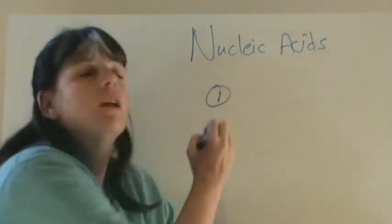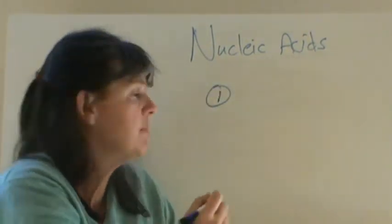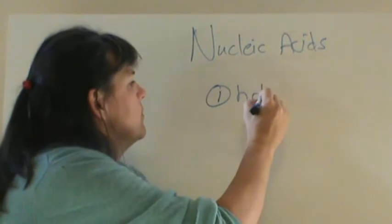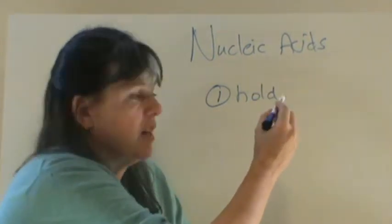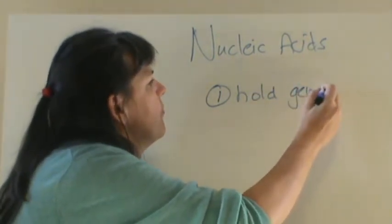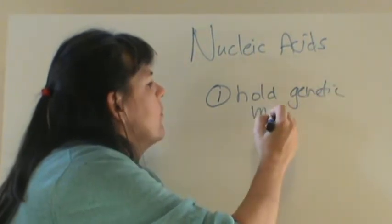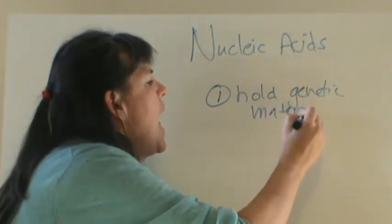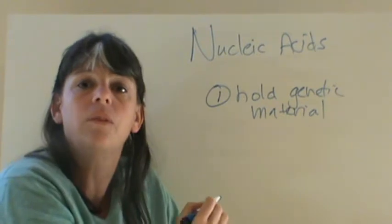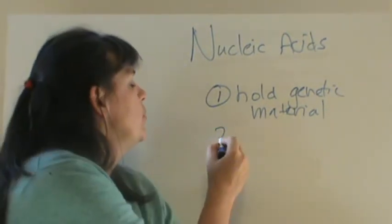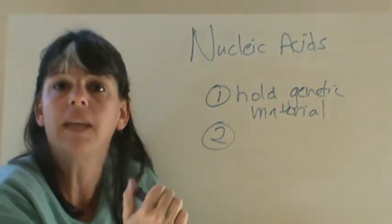The function of DNA and RNA is, one, to hold our genetic material, and all living things have this genetic material. And in so, the DNA provides a blueprint for making proteins.